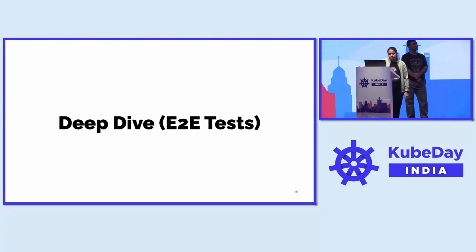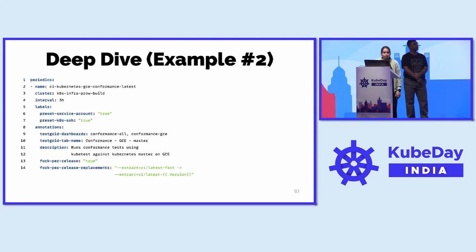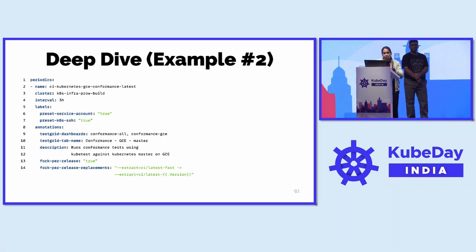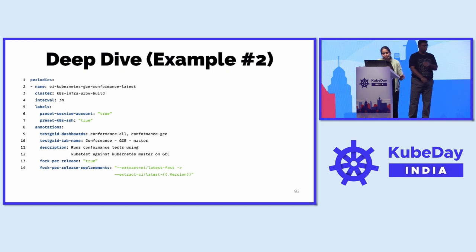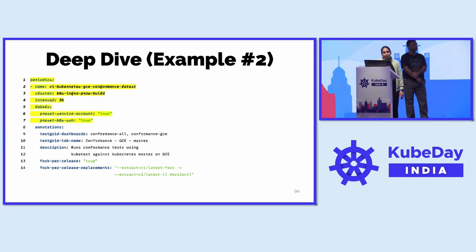Here is another example from the Kubernetes project — it's a release-blocking job, meaning this is going to be one of the jobs that gives a CI signal on whether to go ahead with any release. Again going from the first line, it's a periodic job, and we're telling it to run at every three-hour interval from line number four.